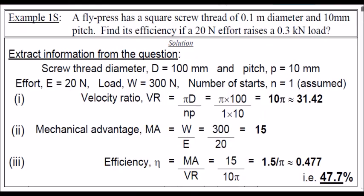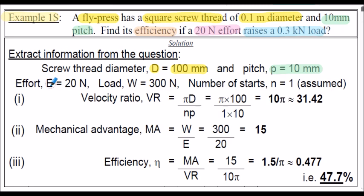Let's consider example 1S. A fly press has a square screw thread of 0.1 metres diameter and 10 millimetres pitch. We've got to find the efficiency of the screw thread if a 20 newton effort raises a load of 0.3 kilonewtons. Extracting information: diameter D is 100 mm, pitch is 10 mm, effort E is 20 newtons, load W is 300 newtons. The question doesn't state a number of starts, so we assume n equals 1.